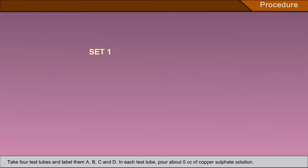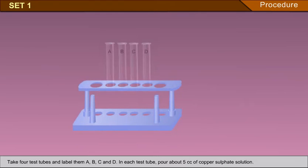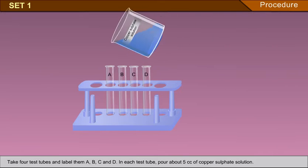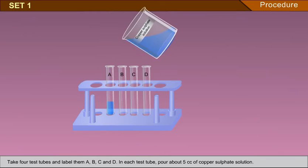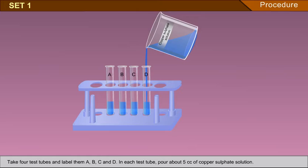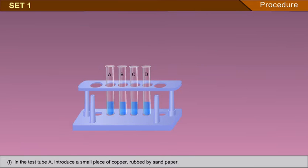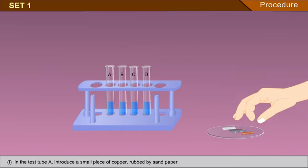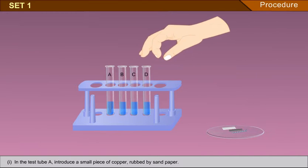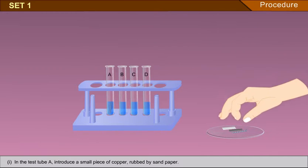Set 1: Take 4 test tubes and label them A, B, C and D. In each test tube, pour about 5 cc of copper sulphate solution. In test tube A, introduce a small piece of copper rubbed by sandpaper.